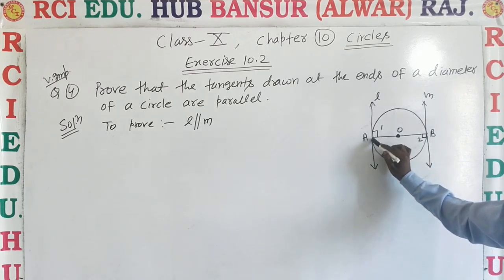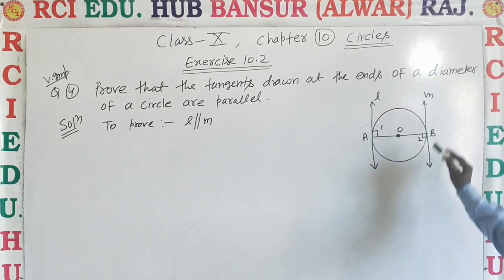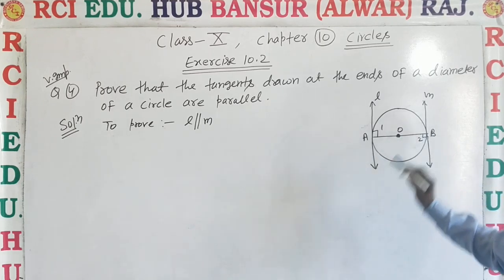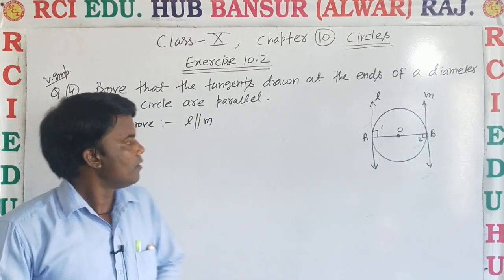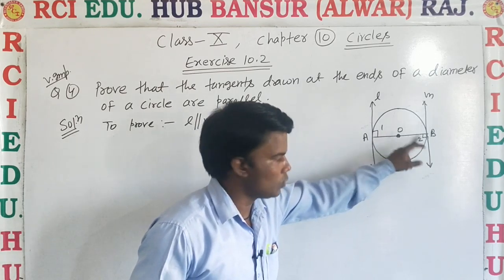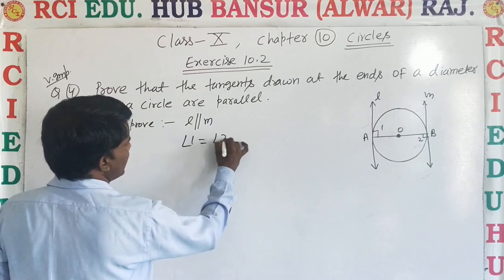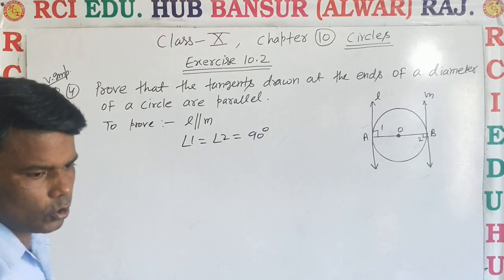We know that contact point of tangent and radius from the center point form angle of 90 degrees. Same way, contact point, tangent and radius from the center point form angle of 90 degrees. Angle 1 and angle 2 both are 90 degrees, so that angle 1 is equal to angle 2.